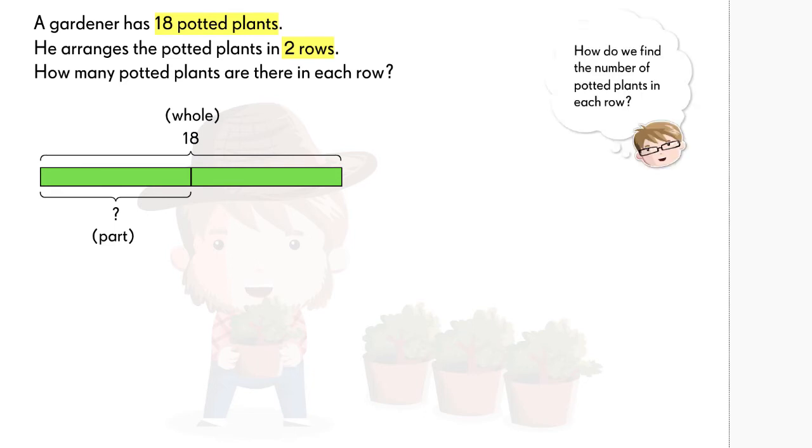How do we find the number of potted plants in each row? This represents the number of plants in one row.